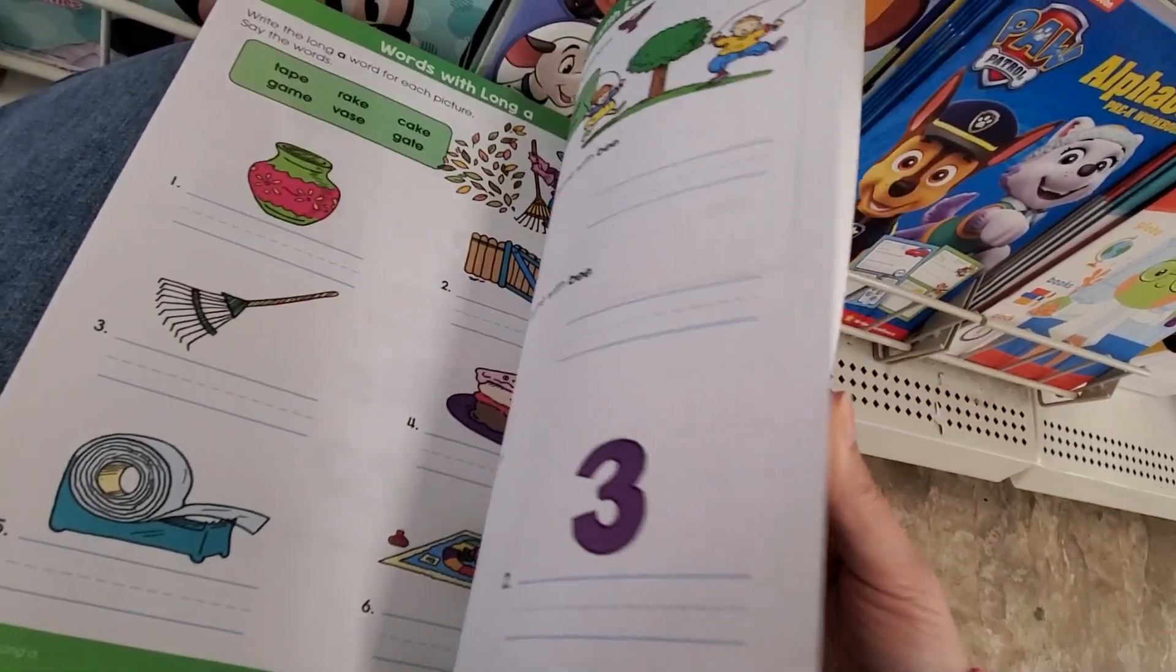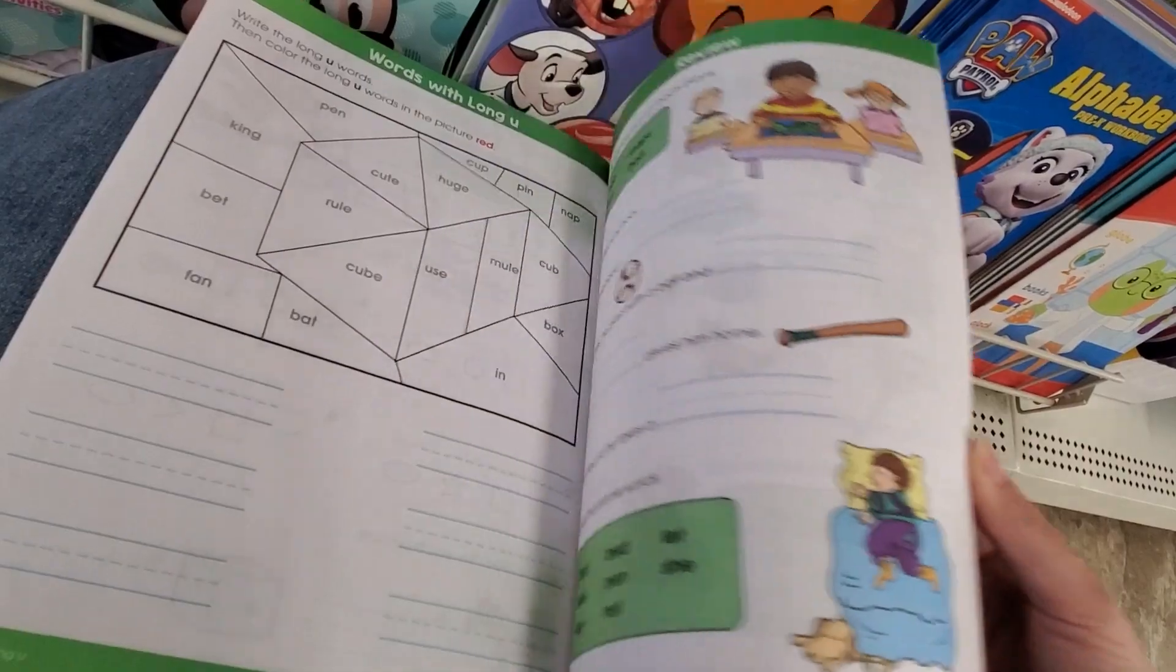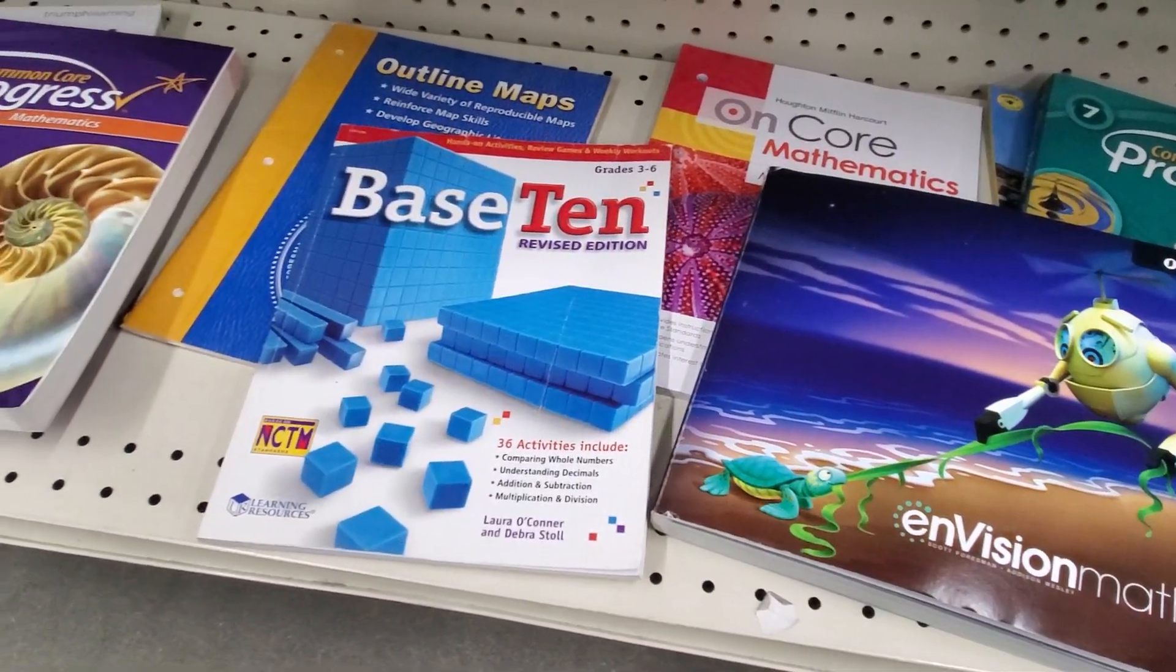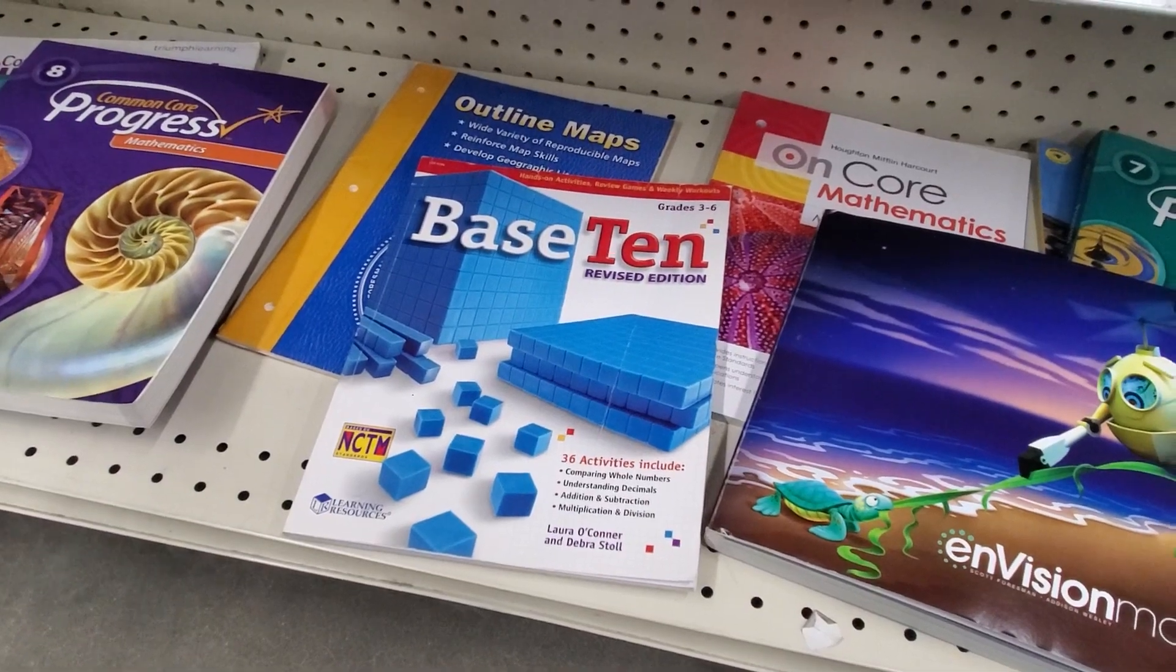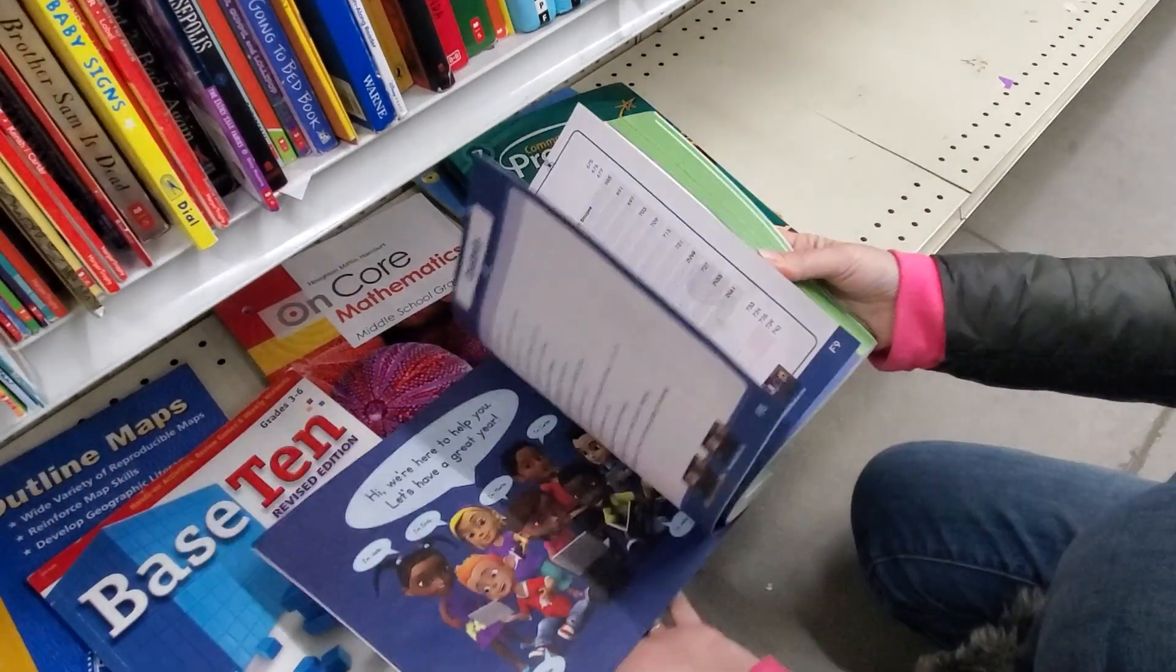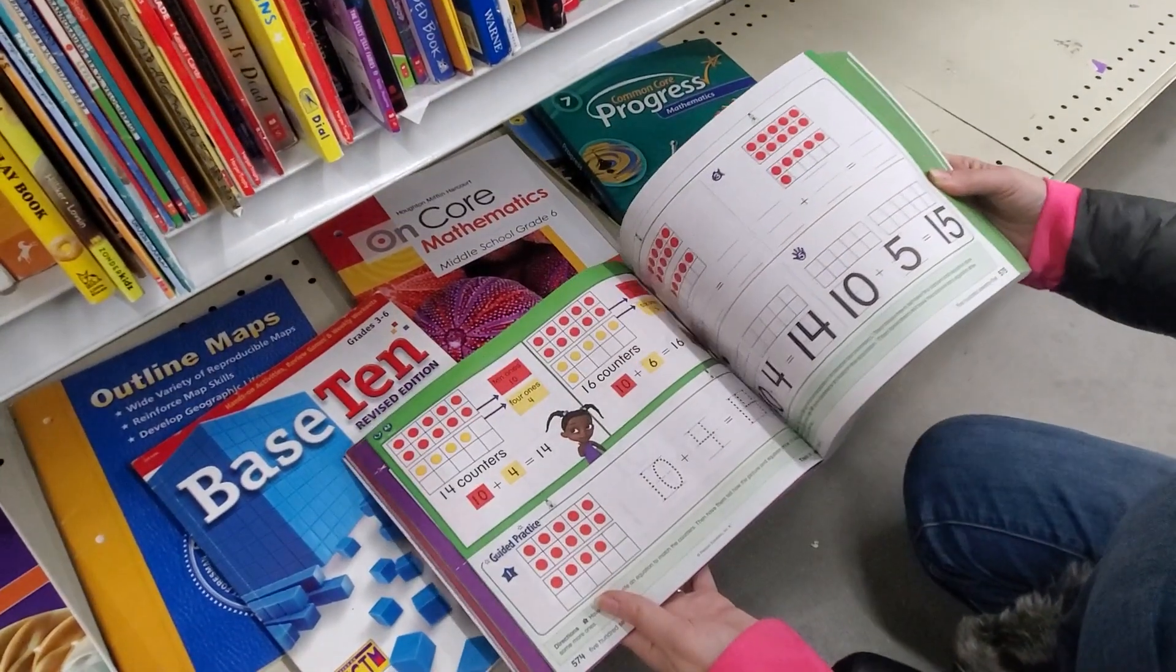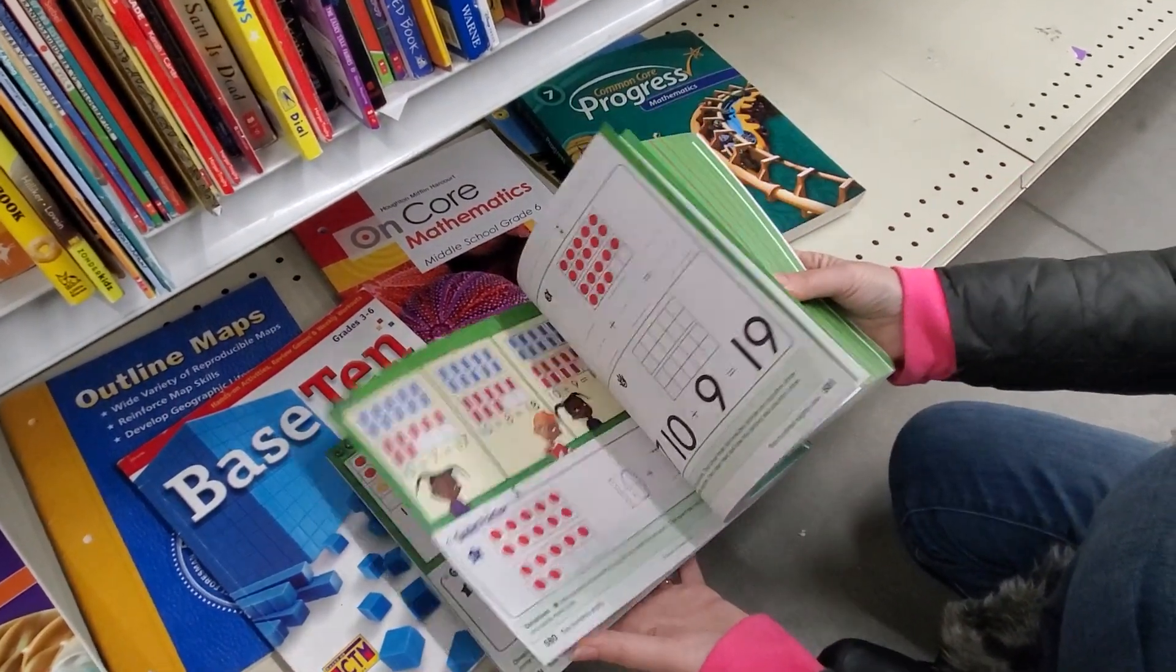Once you've accumulated some little workbooks from Goodwill or other thrift stores, Dollar Tree, then we have to decide how to use them. The way I like to organize my stuff is I use a three-ring binder and I pull all the pages out of those workbooks and put them in order according to what they're about.